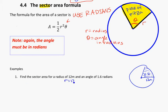So r equals 12, theta equals 1.6. Using the area formula, one-half times 12 squared times 1.6. Again, I'm paying attention to the fact that that is in radians. This is going to be a theta, so I have to use radians.